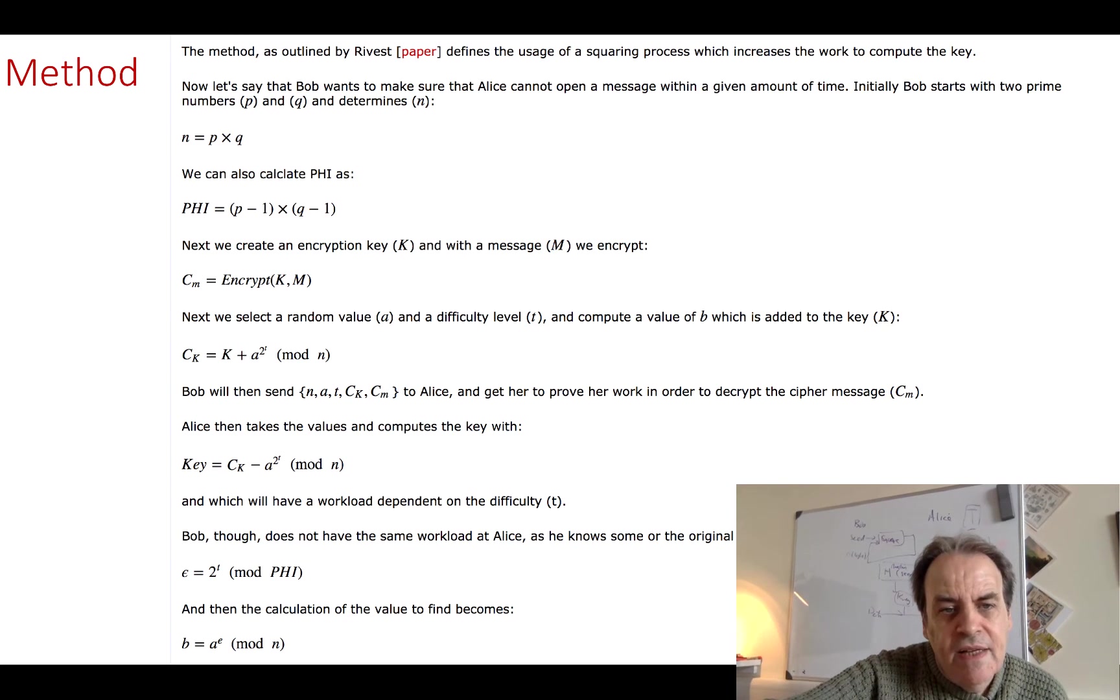After that, Alice then takes this, she takes the key that she's been given, and then she subtracts it by the a value to the power of 2t mod n. And this has a certain difficulty. The higher the value of t, the more difficult it will be for the system to compute this value. This is quite a difficult calculation. Bob though on the other hand just has to compute 2 to the power of t mod phi and then calculates the b value. So it's actually quite easy for him to find this value but it's much more difficult because Alice is using this power value.